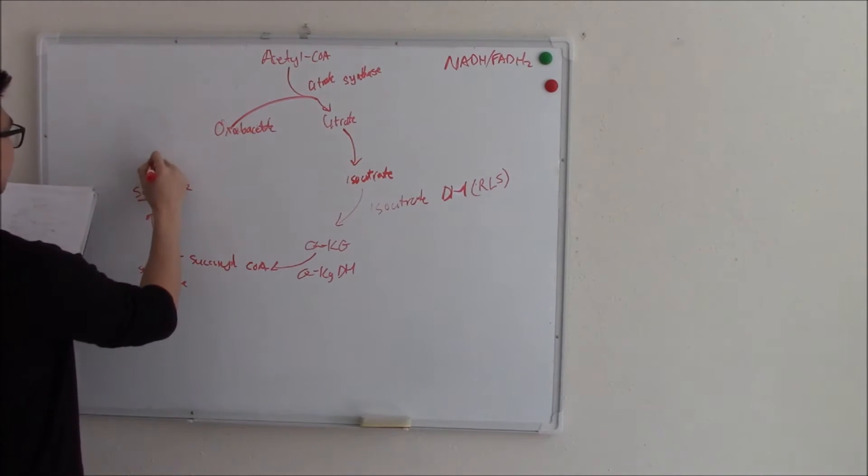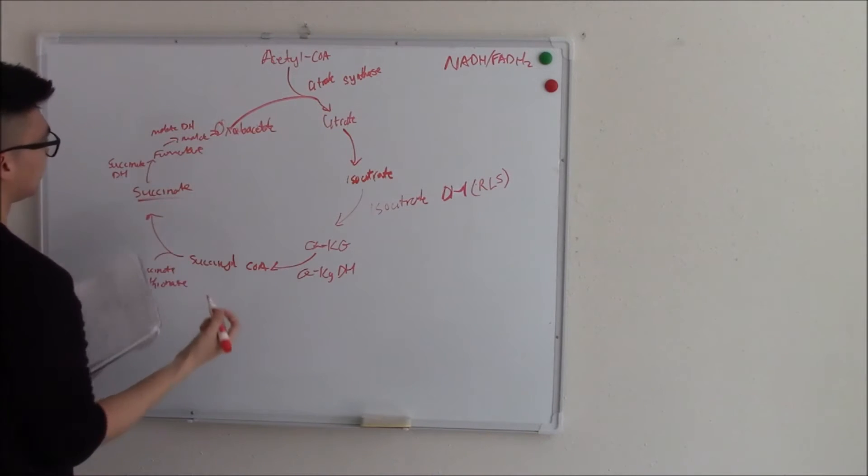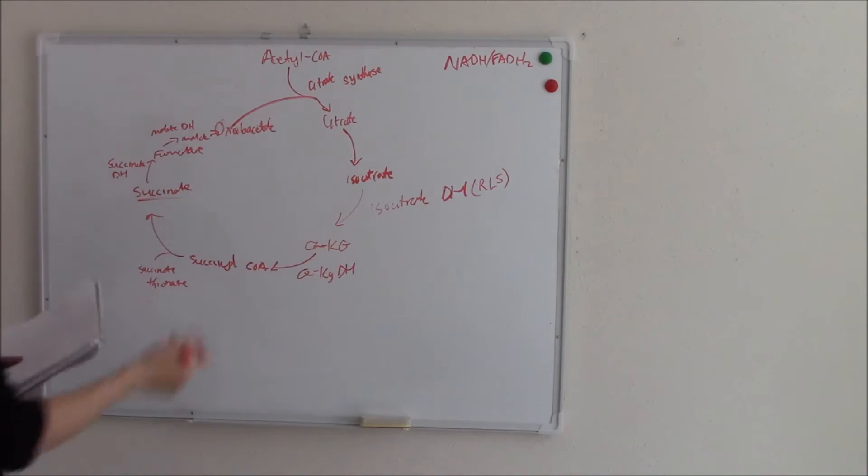That turns into fumarate via succinate dehydrogenase, then to malate via fumarate hydratase, and then finally you get back to oxaloacetate via malate dehydrogenase. And that is the loop.